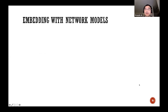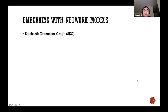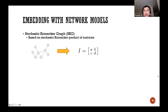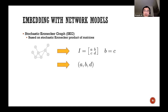One example of embedding with network models is based on the Stochastic Kronecker Graph model. The SKG model models large-scale networks based on the stochastic Kronecker product of matrices — it learns a K×K matrix from a network. Setting K=2 gives a 2×2 matrix. For undirected networks, the matrix is symmetric, giving three different values: A, B, and D. Extracting A, B, D gives a 3D Kronecker embedding, also called a Kronecker point. Values A, B, D are between 0 and 1, so any graph is embedded as a 3D point in a 1×1×1 cube.